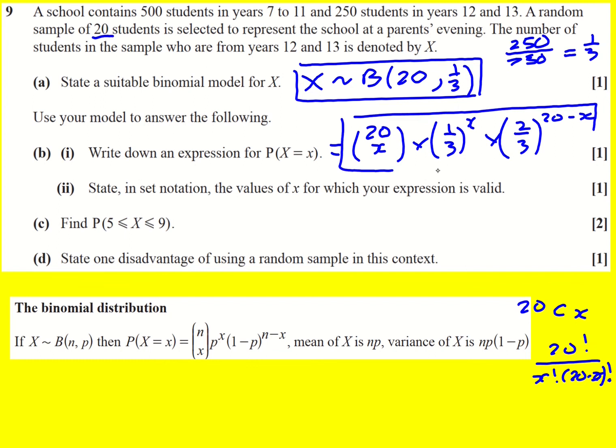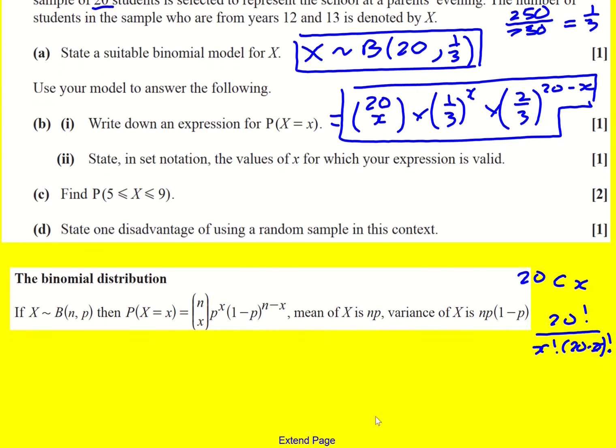I'm just going to talk about where this comes from because sometimes I find that people don't know, they just kind of learn it maybe or maybe they don't and then forget. So I'm going to look at a more simple example. Let's say that x was equal to 3. Now if x is equal to 3 then I want to get three successes and two failures somehow.